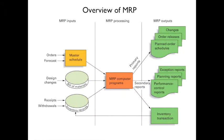Here's an overview of MRP. The inputs are a master schedule — you have orders, forecasts, and design changes. The design changes go into the bill of materials, and then inventory has receipts and withdrawals. All of that data goes into the MRP computer program. Primary output reports include order releases and planned order schedules. Secondary reports are exception reports, planning reports, performance control reports, and inventory transactions.